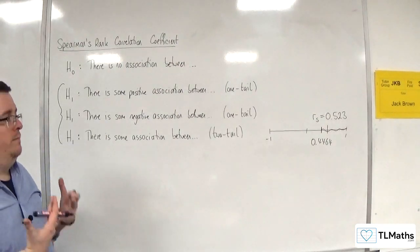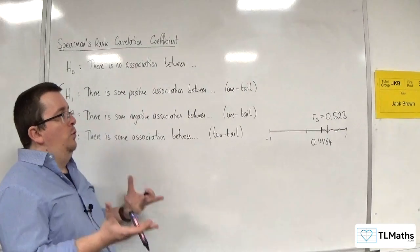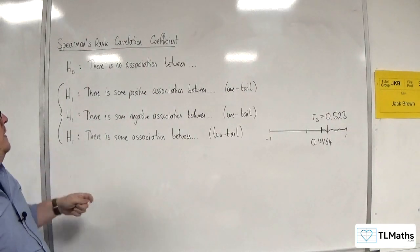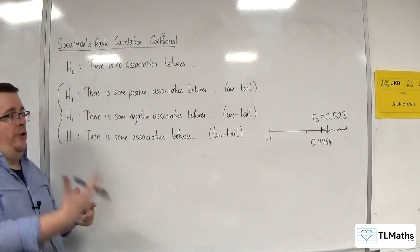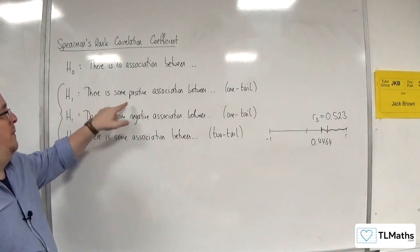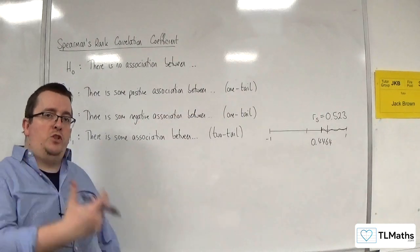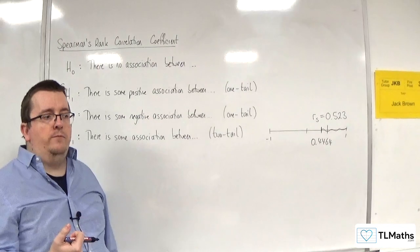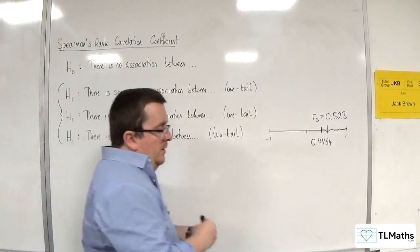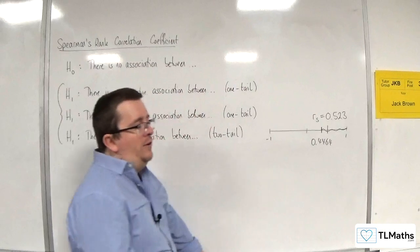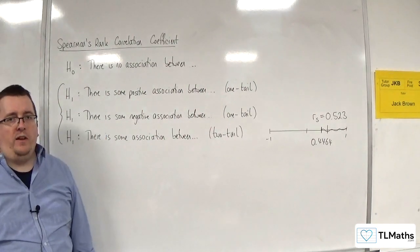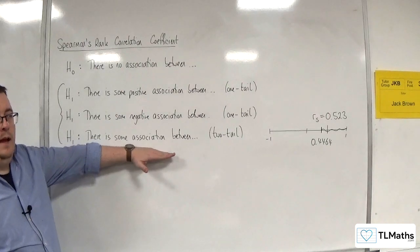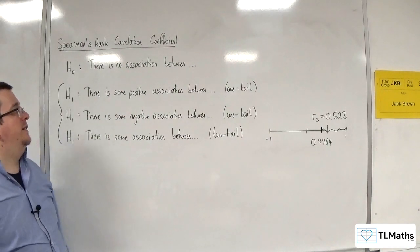The conclusion in context would be saying in this case, if it was a one-tailed test, there is evidence to suggest that there is some positive association between the two judges' scores, for example. It works in a very similar way to the PMCC hypothesis test. Once you get past here, essentially your layout should be identical.